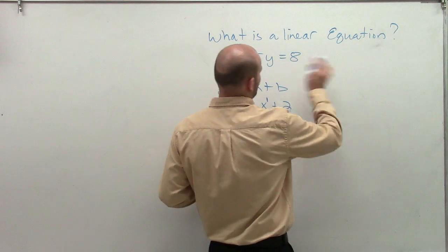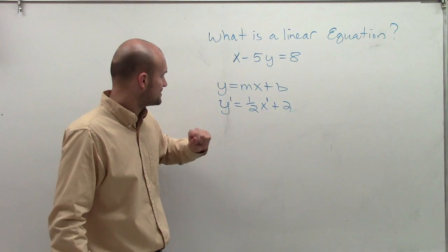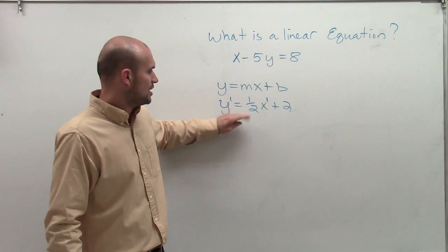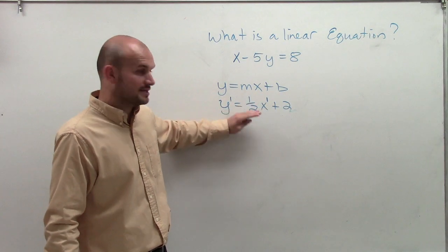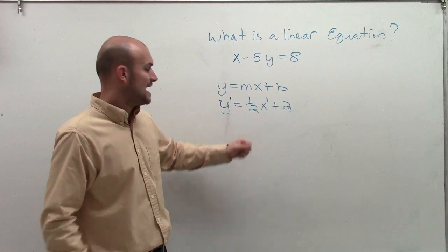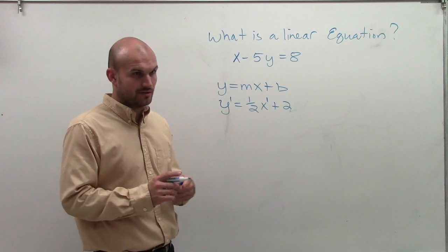And this can even work through the standard form, the slope-intercept. So as long as you have your variables in the same format and they are not being multiplied by each other, then you're good. You have a linear equation.